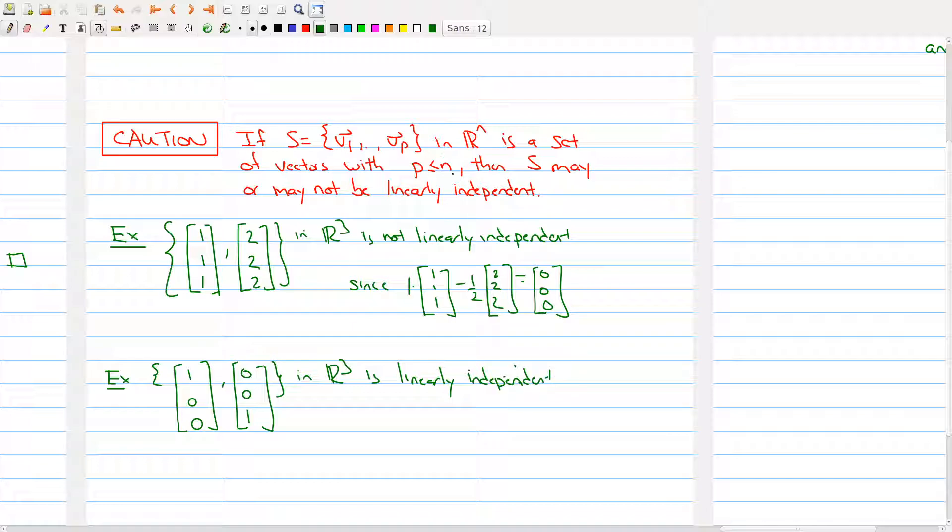So, when the number of vectors is less than n, you have to still go and check whether they're linearly independent or dependent. If the number of vectors is more than n, then it's automatically dependent.